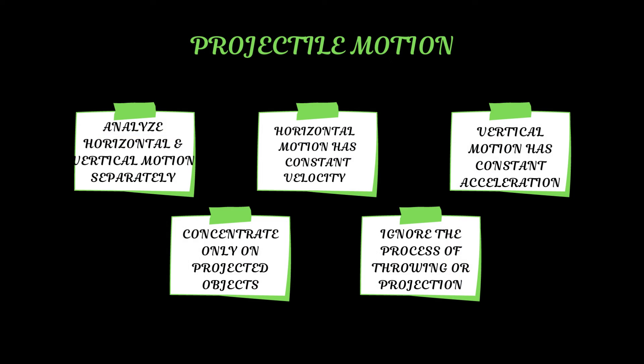Neither the horizontal nor vertical motion has any effect on the other. This means we can analyze projectile motion as a combination of horizontal motion with a constant velocity, and vertical motion with a constant downward acceleration as a result of the earth's gravitational pull.